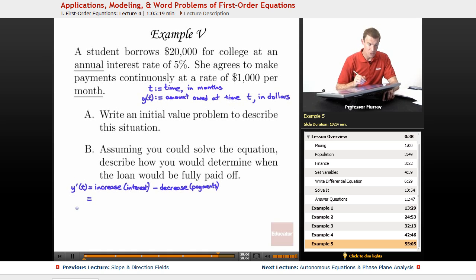So the interest that she pays is dependent on the amount that she owes at any given time. So the amount that she owes at any given time is y(t). And then it says that she's borrowing at an interest rate of 5%. But that's an annual interest rate. So what that means is that every year she would have to pay back an extra 5% of what she owes.